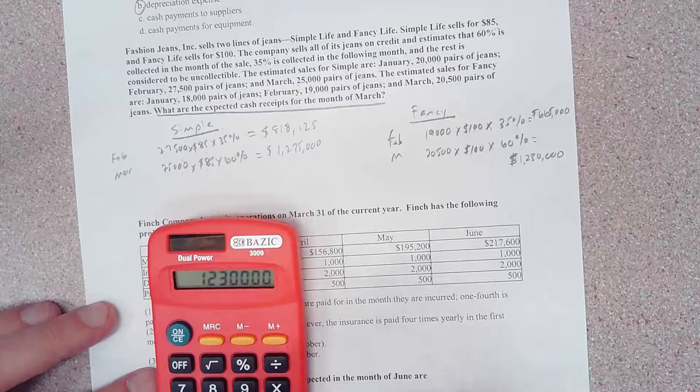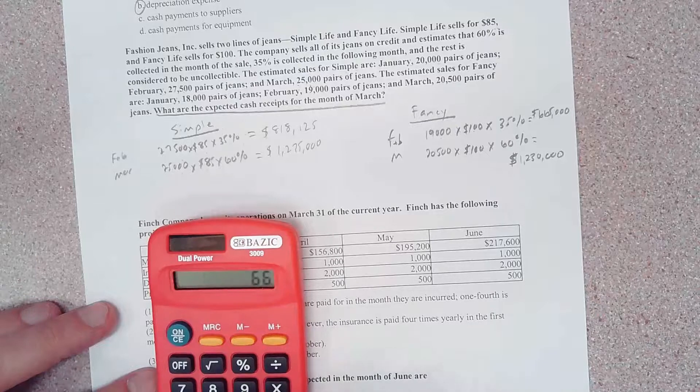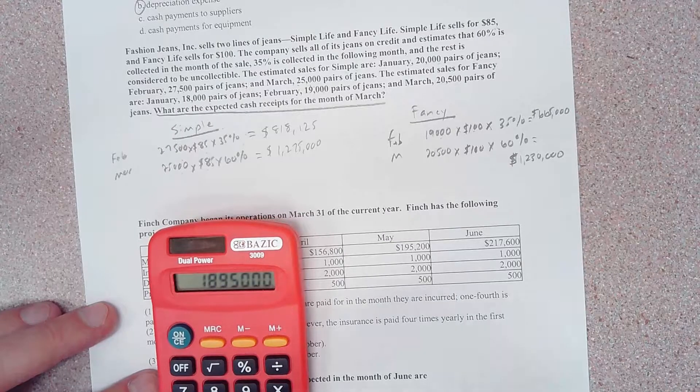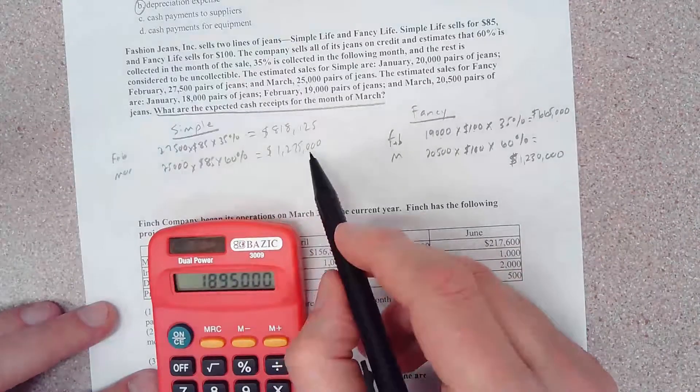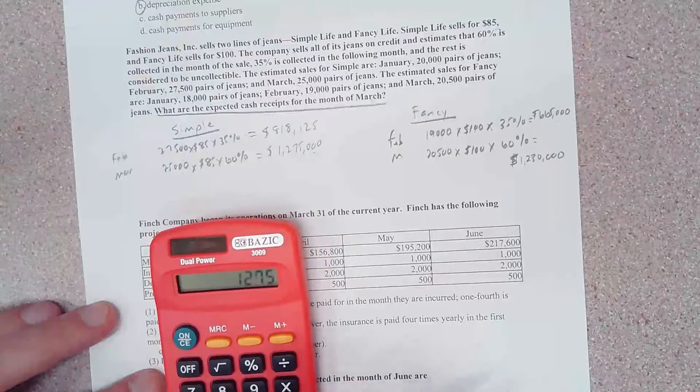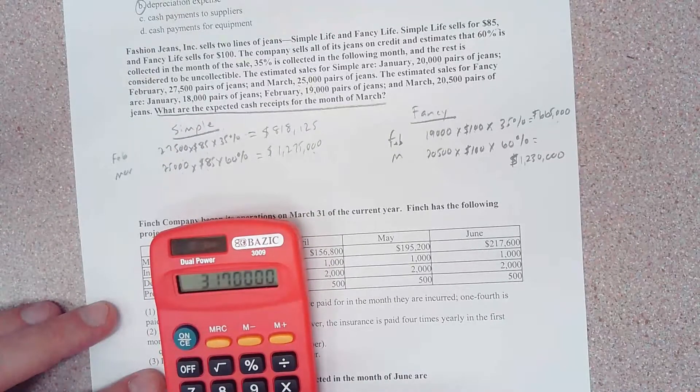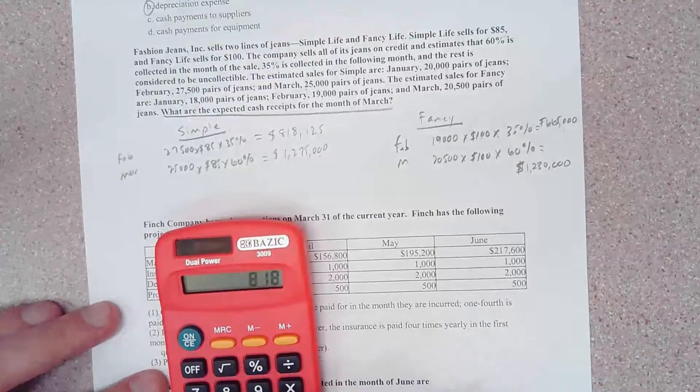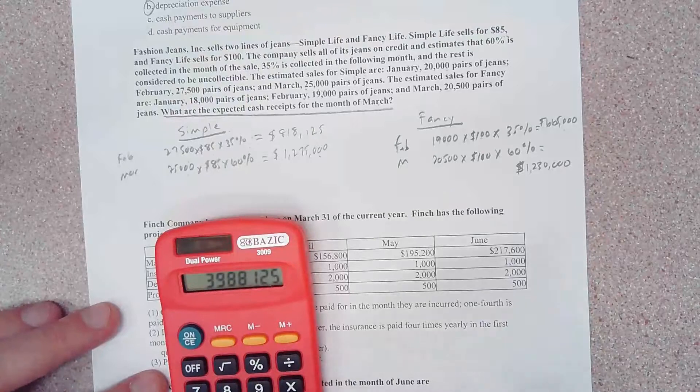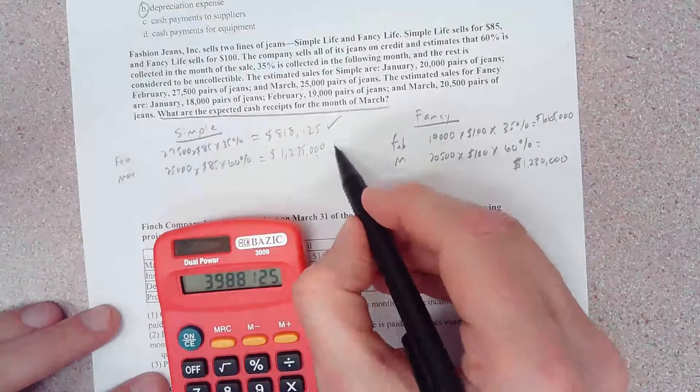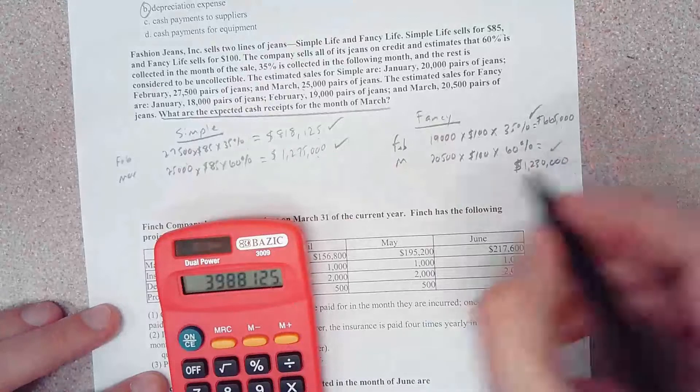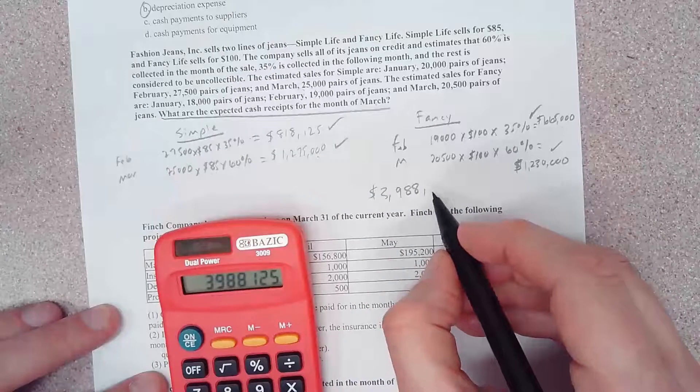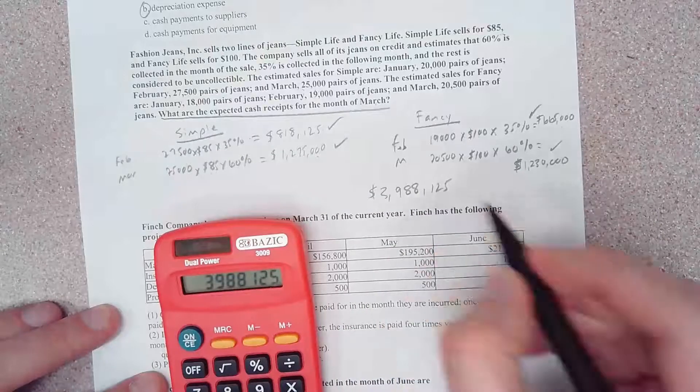I'm going to leave that number on my calculator and then I'm going to add the $665,000 and this 1.275 million and then this $818,125. So if we take all four of these figures, we should come up with $3,988,125.